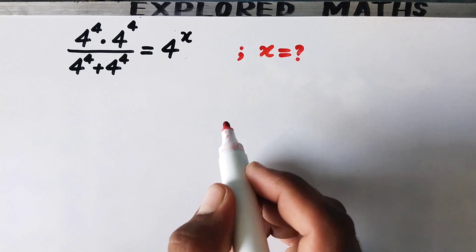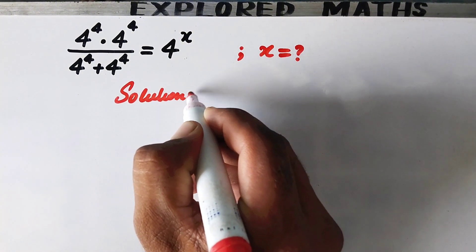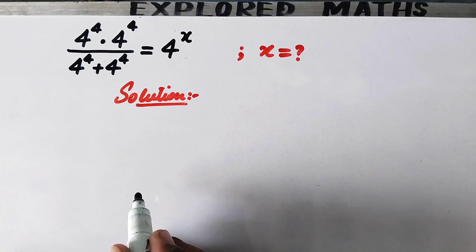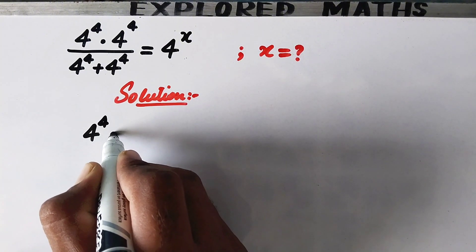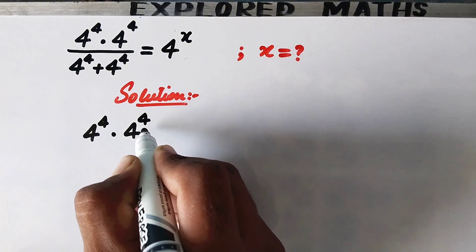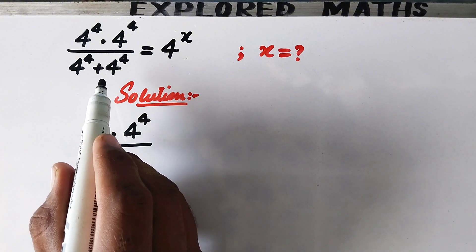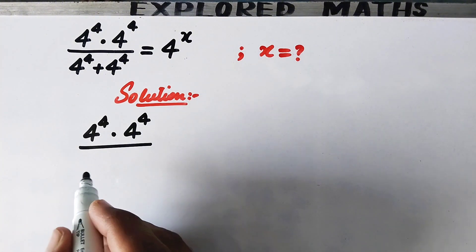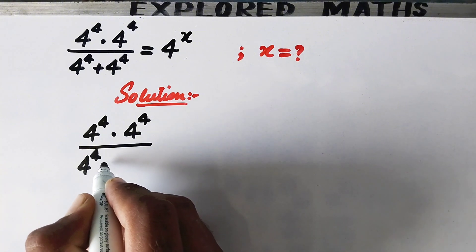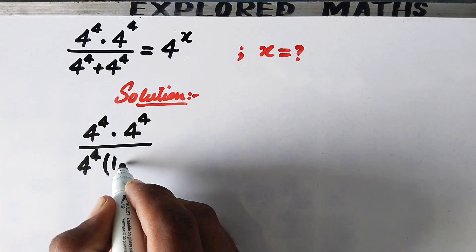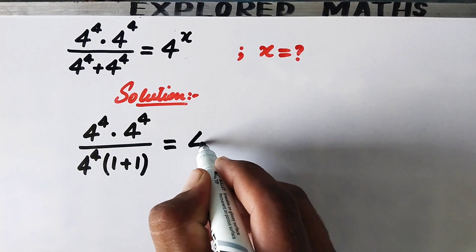We have to find the value of x. In the first step, we write it as: 4 to the power 4 times 4 to the power 4, divided by — since both values in the denominator are the same, we take it out as a common factor — 4 to the power 4 times (1 plus 1), equal to 4 to the power x.